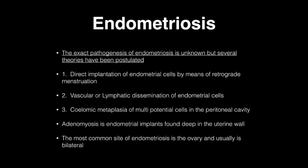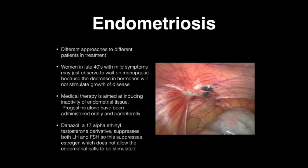The most common site of endometriosis is usually the ovary, and it is usually bilateral. Women in their late 40s with mild symptoms may observe and wait for menopause, as decreasing hormones will not stimulate growth of the disease and pain should subside. Medical therapy is aimed at inducing inactivity of endometrial tissue. Progesterones alone have been administered orally and parenterally. Danazol, a 17-alpha-ethinyl testosterone derivative, suppresses LH and FSH, thereby suppressing estrogen, which does not allow the endometrial cells to be stimulated.